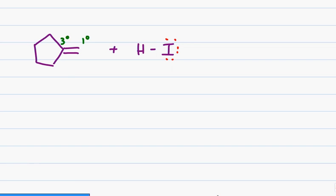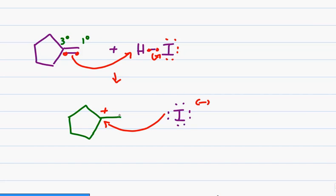Going through the mechanism, the pi electrons will reach out and grab the hydrogen causing the bond between hydrogen and iodine to collapse as a lone pair onto iodine. My intermediate will be the more stable carbocation forming on the tertiary position and the negative iodide forming in solution. The iodide will come and attack the carbocation and give me the expected final product of a tertiary iodine.